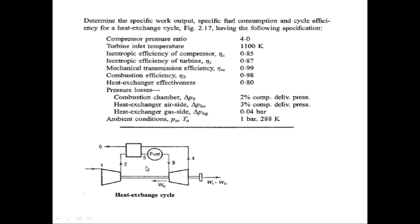The compressor pressure ratio is 4. Turbine inlet temperature is 1100 Kelvin. Isentropic efficiency of the compressor is 0.85. Isentropic efficiency of the turbine is 0.87. Mechanical transmission efficiency is 0.99. Combustion efficiency is 0.98. Heat exchanger effectiveness is 0.80. At the combustor chamber, the delta p_b is given as two percent.